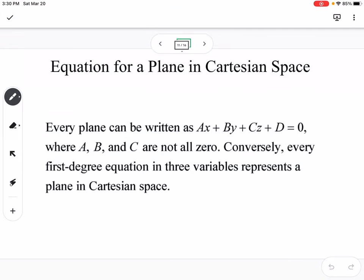Equation for a plane. An equation for a plane in Cartesian space is Ax + By + Cz + D = 0, where A, B, and C are not all 0. Every first degree equation in three variables represents a plane in Cartesian space.